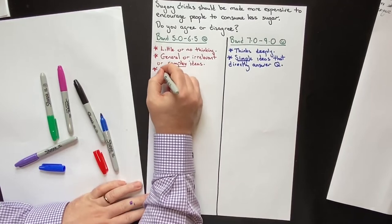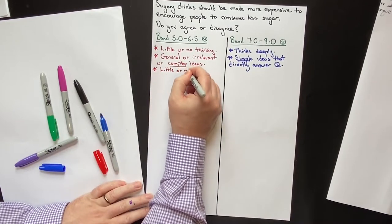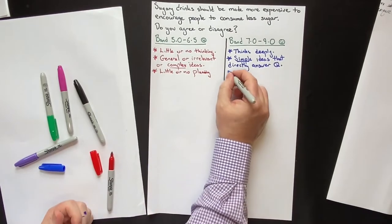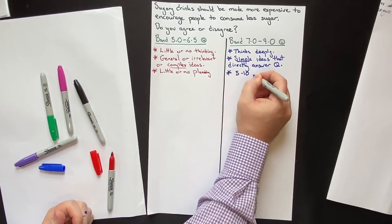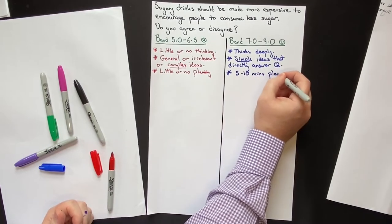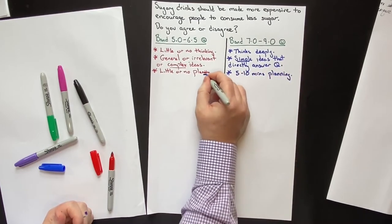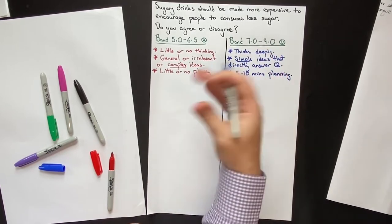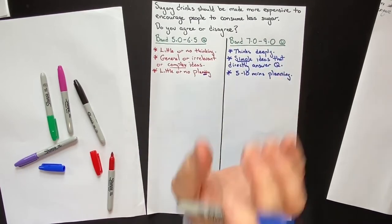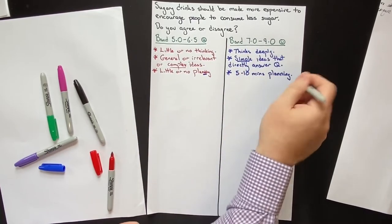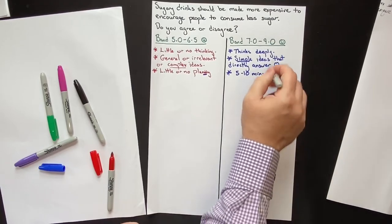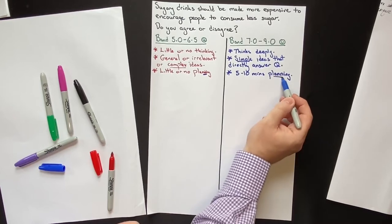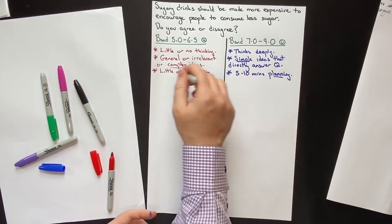The low-scoring student does little or no planning, whereas the high-scoring student does five to ten minutes of planning. At IELTS Advantage, we have more Band 7-or-above success stories than any other course in the world. When we ask students who get a Band 7 or above what were the keys to getting a high score, 90% of them say they spent five to ten minutes planning.